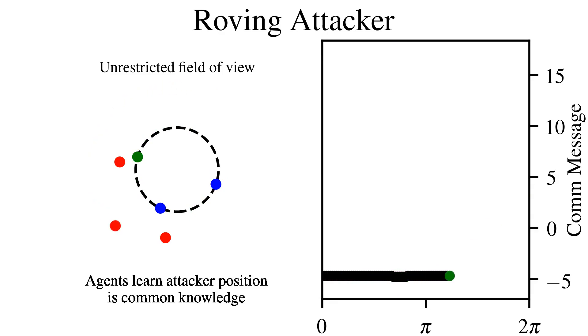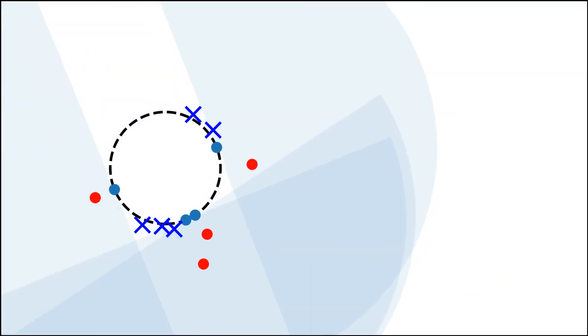When defenders have a restricted field of view, their messages begin to include additional information about the intruders they see.